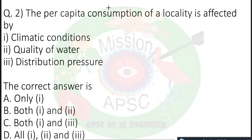Next question: The per capita consumption in a locality is affected by climate condition — if the climate is hot, water consumption will be more. It also depends on water quality and distribution. So factors 1, 2 and 3 — all are related. The answer is all one, two and three.